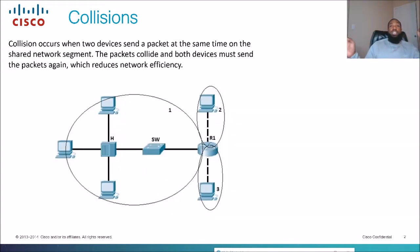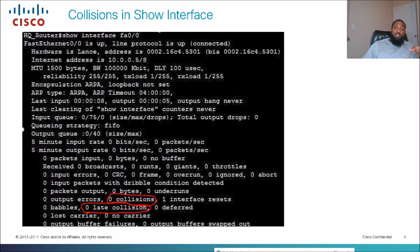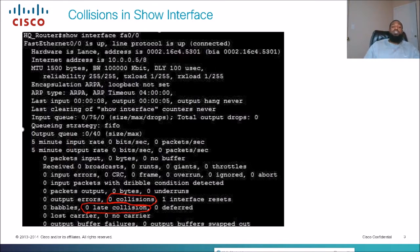How do we detect collisions? We'll know from a slowdown in network connectivity, but one command we really want to know to investigate this issue is the show interfaces command. As you can see, this is an example of the show interface command — a very important command. You'll run this a lot when troubleshooting layer one or cabling issues. I've got circled at the bottom zero collisions and zero late collisions. That's how we determine whether we're having collisions.